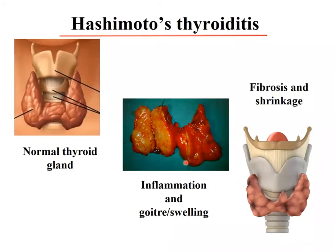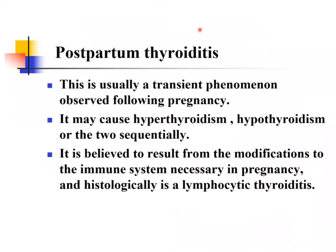Hashimoto's presents with painless enlargement during the inflammatory phase — the gland is not tender. Eventually, fibrosis and shrinkage develop, forming what is called Riedel's goiter. Postpartum thyroiditis is similar, mostly presenting as hypothyroidism but sometimes hyperthyroidism, typically resolving after delivery. However, if anti-TPO or anti-thyroglobulin antibodies are present, it may progress to irreversible Hashimoto's thyroiditis.